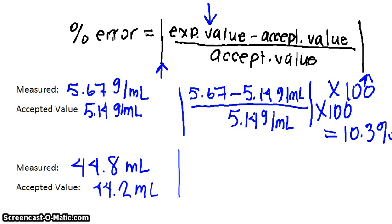So again, we're going to put this in absolute value brackets. His experimental value was 44.8 milliliters, and we're going to subtract his accepted value and divide it out by the accepted value, which is 44.2 milliliters.